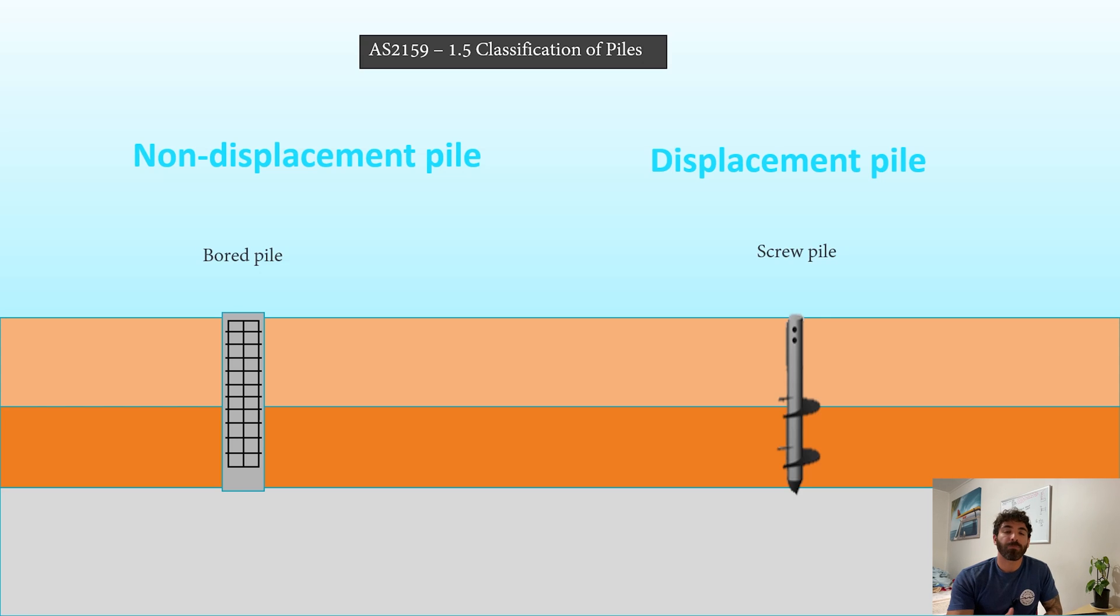An example of a non-displacement pile would be a CFA or continuous flight auger pile, or a bored pile. A displacement pile would be a driven pile or a screw pile, for example.